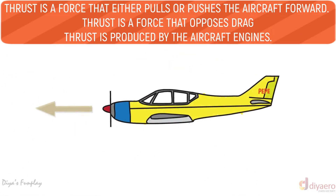An aircraft accelerates when thrust increases. Thrust is a force that either pulls or pushes the aircraft forward. Thrust is a force that opposes drag and is produced by the aircraft engines.